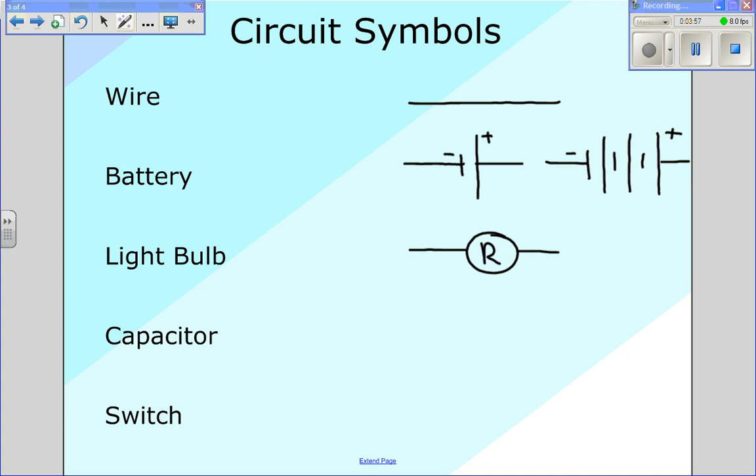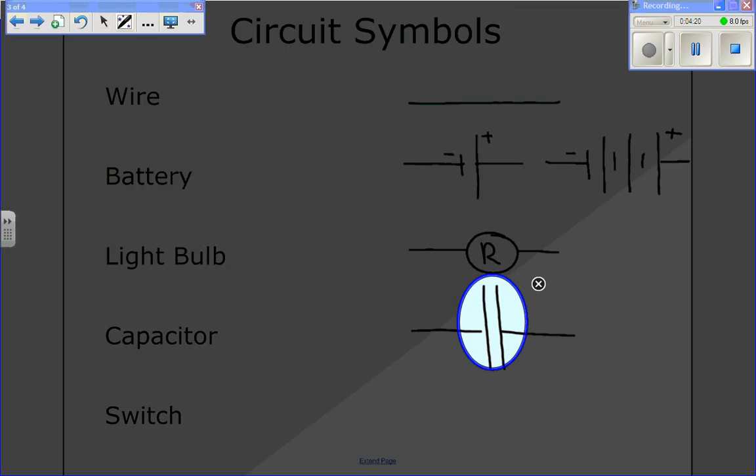A capacitor is also pretty simple. A capacitor is two conducting plates, and so all you do is draw two vertical lines next to each other. Notice that there's an insulator in between a capacitor, which is why we see this as an open system, not a closed system. There is nothing in between the two conducting plates, so no charge can move from the left side to the right side of this capacitor.